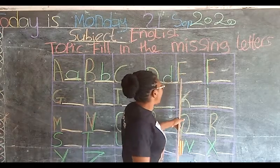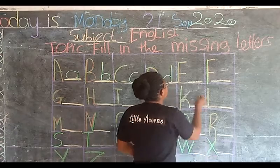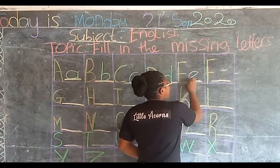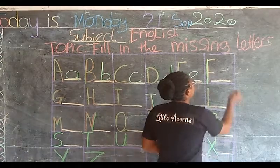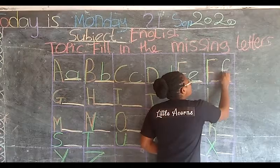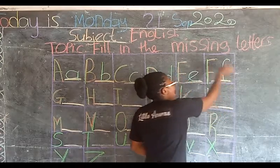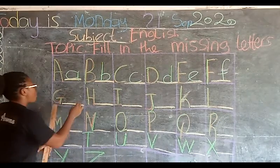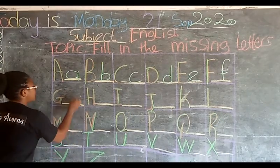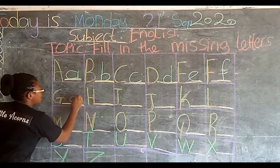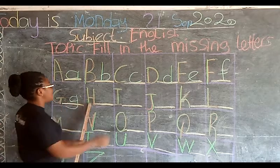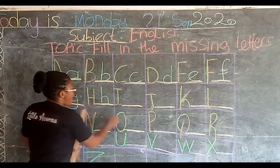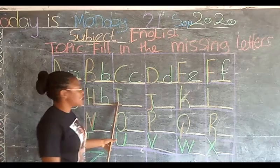Capital E, the lowercase is small e. Capital F, the lowercase is small f. Capital G, the lowercase is small g. Capital H, the lowercase is small h.